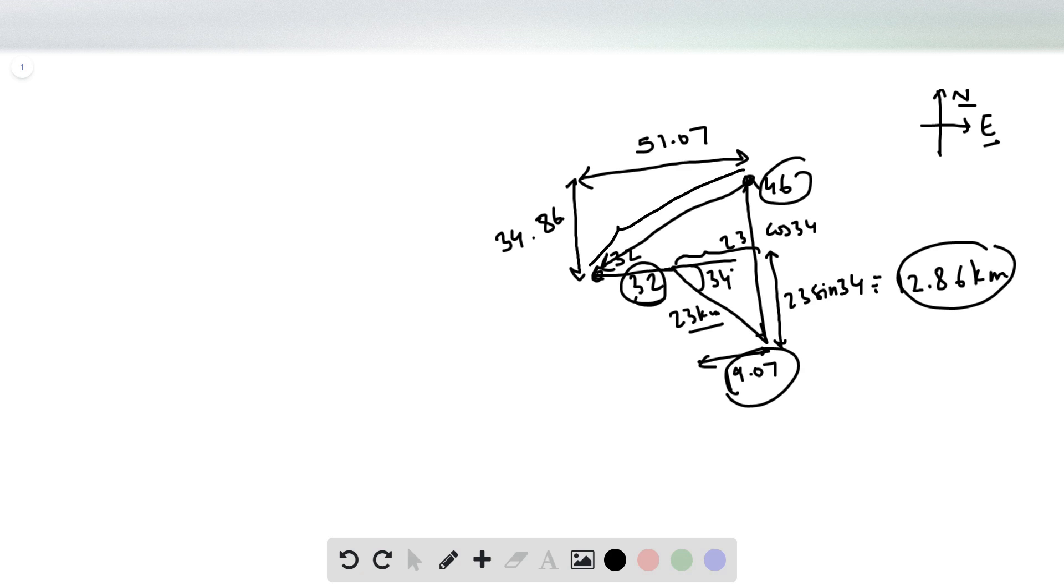Now we can find the distance of our final vector using Pythagorean theorem. It would be the square root of 51.07 squared plus 34.86 squared. This turns out to be 60.9 kilometers.